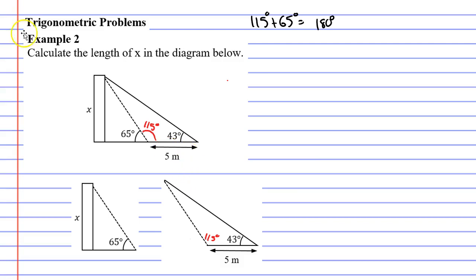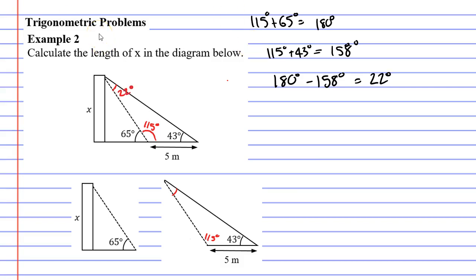I can also find another angle — this angle up here in the corner. I know that angles in a triangle add up to 180 degrees. So I'll take the 115 degree angle and add it to the 43 degree angle, which gives me 158 degrees. Now if I take 180 degrees and subtract 158 degrees I'm going to get 22 degrees. So that's what the third angle has to be, such that the three angles add up to 180 degrees.